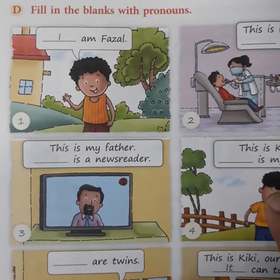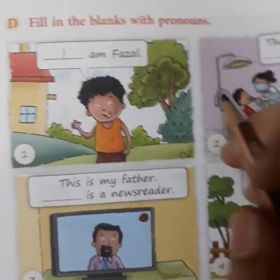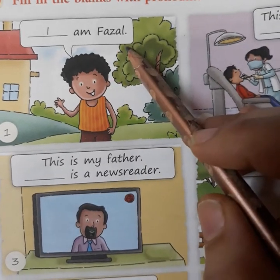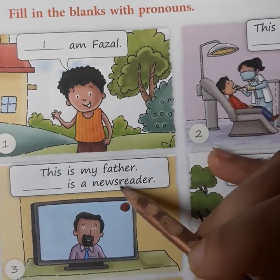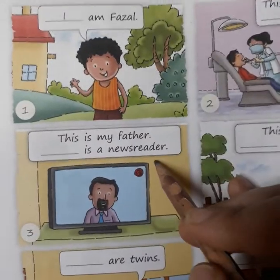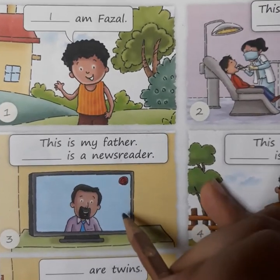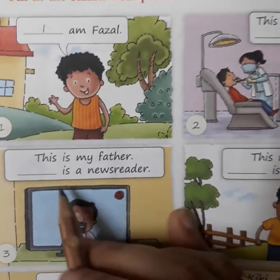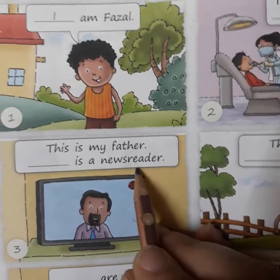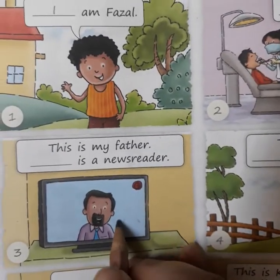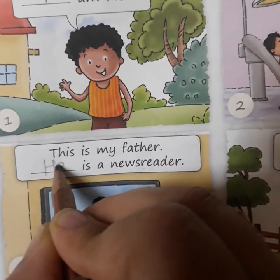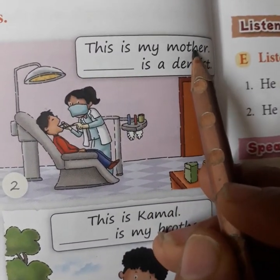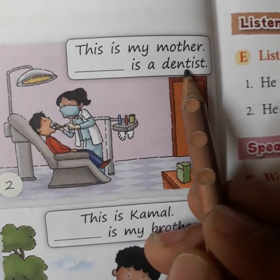Let's move on to the next page. Fill in the blanks with pronouns. Fuzzle says: 'This is my father. Dash is a news reader.' Fuzzle is talking about his father, so we write 'he'. He is a news reader.